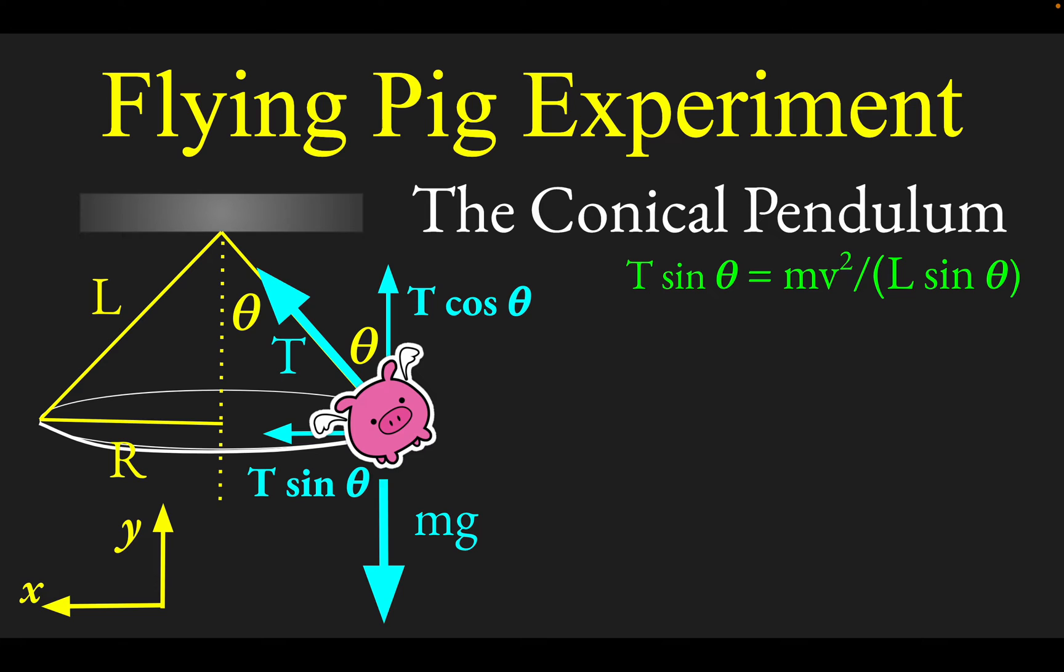Here is your equation from horizontal information, and here's your equation from vertical information. We're going to substitute this expression for T from the second equation into the equation above. When you do that, you get this relationship. Notice there's mass on both sides, so that's going to cancel right out.